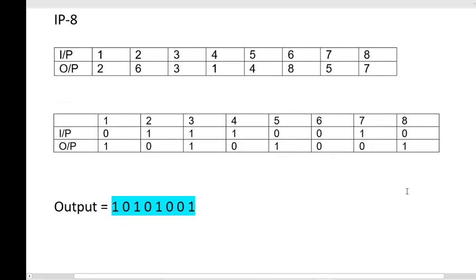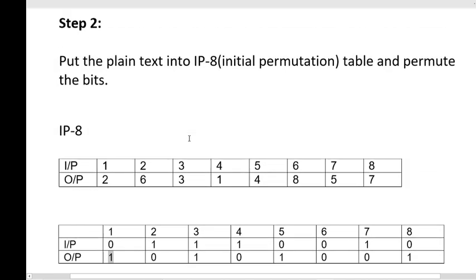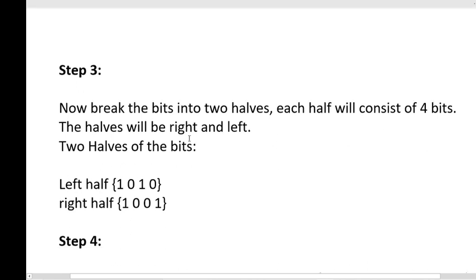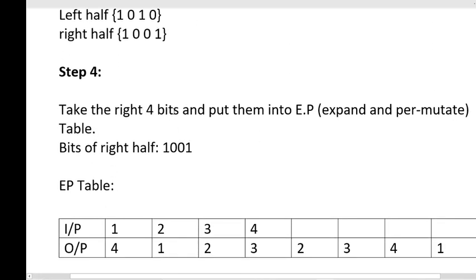The output at the first position is the input value at the second position. Since the value at the second position of the input is 1, the output at the first position is 1. In this manner we find the full output of the IP table. The output in step two is 10101001. In step three we break the IP output into two equal halves: the left half and the right half.